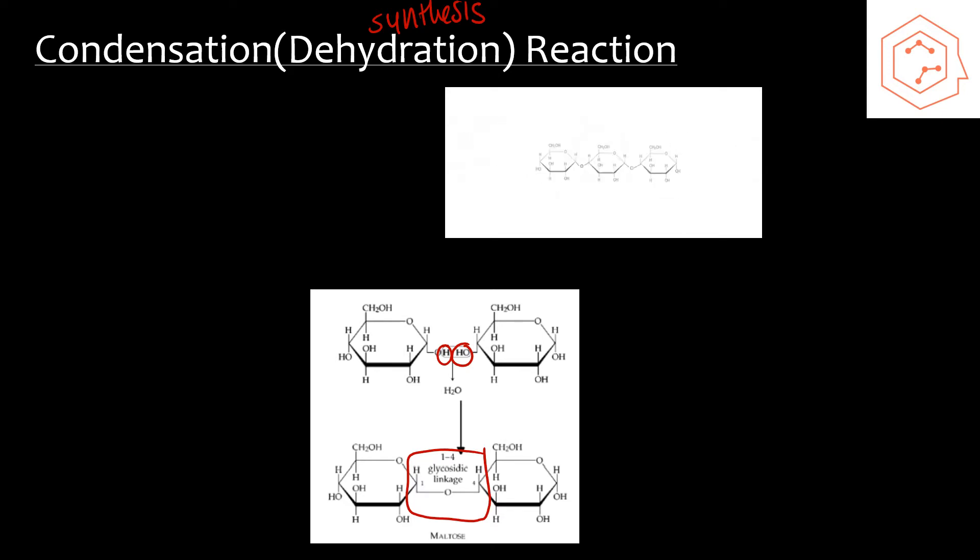Glycosidic linkages or glycosidic bonds are commonly found in carbohydrates. What you get is a polysaccharide, and these individual monomers are known as monosaccharides.